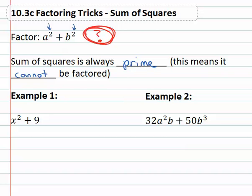So if we see something like x² + 9, this is a trick question—I'm setting you up. You need to know that that is prime. A sum with squares is always prime.